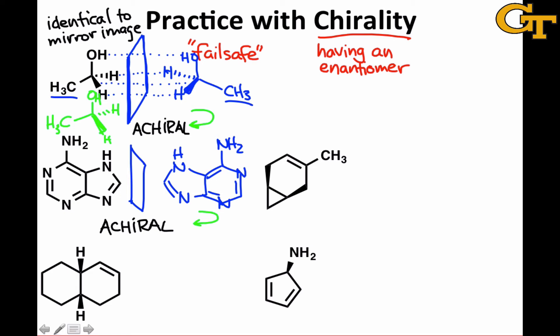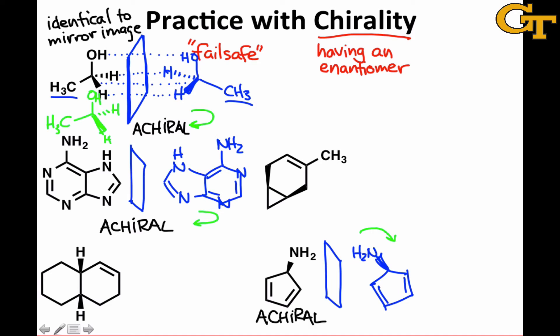If we move down to the bottom right, we can again apply the process of reflection and draw the resulting structure. Now the resulting mirror image has the nitrogen still on a wedge — make sure you understand how reflection leads to that — and has double bonds here and here. We see that we can simply tweak the molecule a little bit, and it's identical to its mirror image, so the original structure is achiral. Note that we can also say, of course, that the mirror image is achiral; the two molecules are identical.